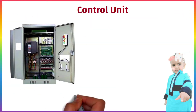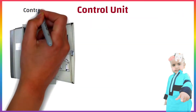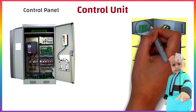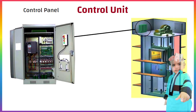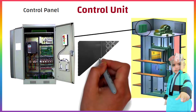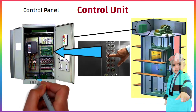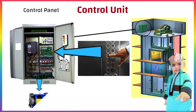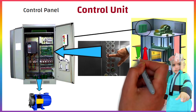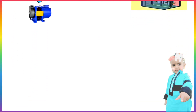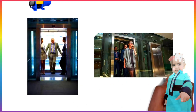Control unit, also known as controller or control panel, is placed in the machine room which is generally at the top of the elevator shaft. When we press any button in a lift, the signal goes to the control unit and is then translated through the system to tell the motor whether to move up or down. Once the elevator has reached its destination, a signal is sent to the control room to either stop and let passengers board or exit.